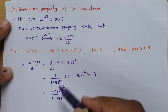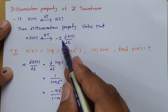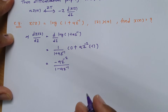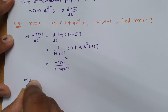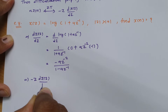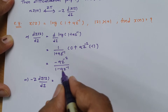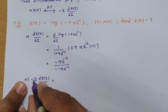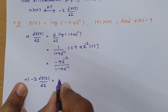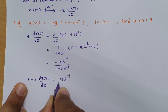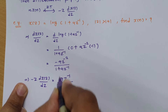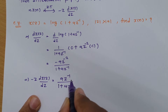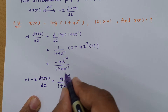To form the -Z·dX(z)/dz term, I will multiply both sides by -Z. Multiplying -Z with -az⁻²/(1 + az⁻¹): the minus times minus gives plus, and -Z times z⁻² gives z⁻¹, so we get: -Z·dX(z)/dz = az⁻¹/(1 + az⁻¹). Simplifying further, az⁻¹ means A/Z, giving us A/(Z + A).